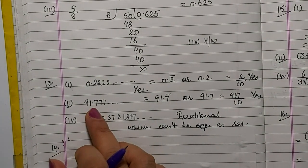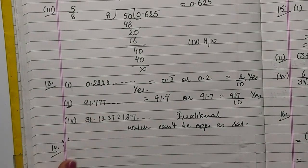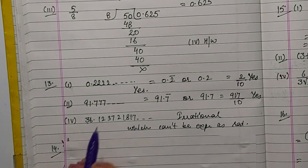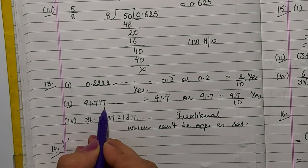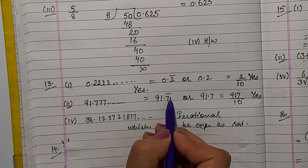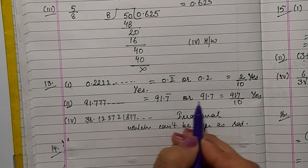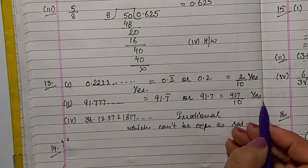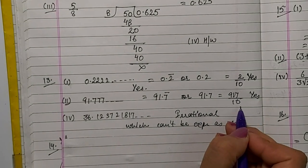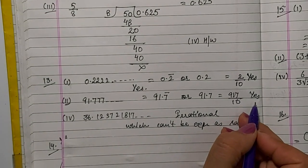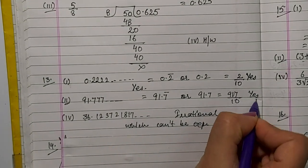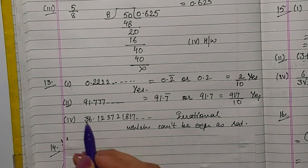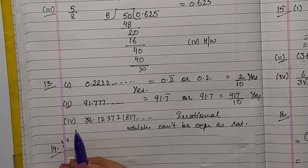Next: 91.777... Here 7 is repeating itself, so we put a bar upon 7 — 7 bar. We write 91.7 bar, or we can write 917 by 10. Hence it is a rational number. Third part: try yourself.